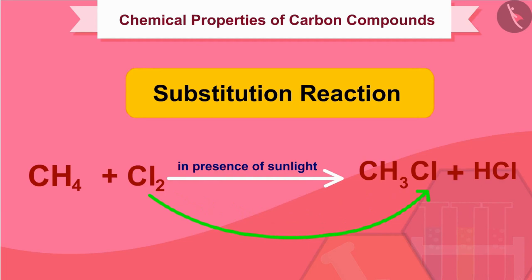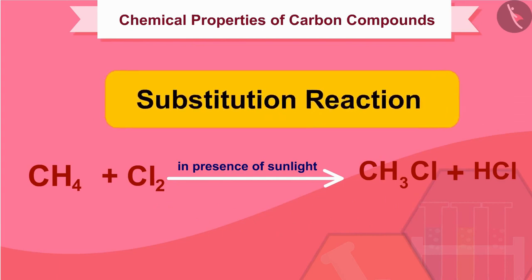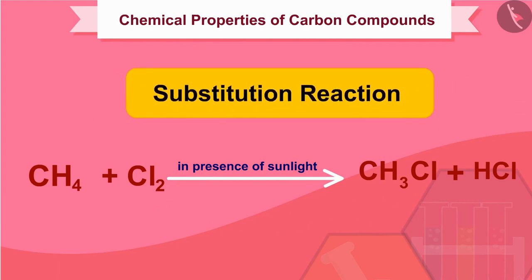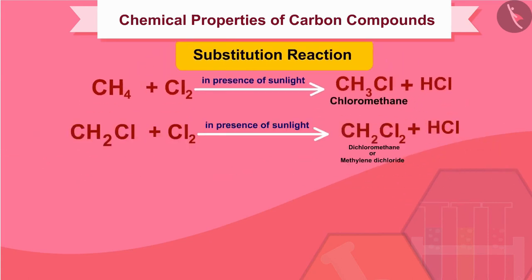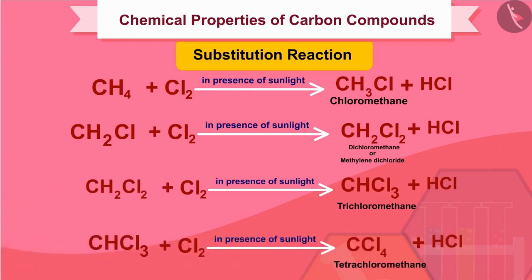In this given reaction, only one hydrogen atom of methane has been replaced by a chlorine atom and we get chloromethane. A number of products are usually formed with the higher homologues of alkanes. By supplying more chlorine, it is possible to replace all the hydrogen atoms of methane by chlorine one by one, obtaining three more compounds: dichloromethane or methylene dichloride, trichloromethane, and tetrachloromethane.